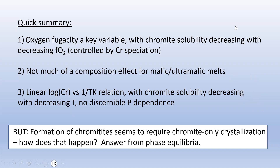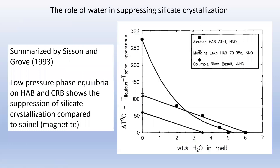Formation of chromatite seems to require chromite-only crystallization — so how does that happen exactly? We can answer that by looking at phase equilibria. One important effect on controlling oxide relative to silicate crystallization is the role of water. We've known for some time that water can have a significant effect on suppressing the silicate-in crystallization temperature, as summarized by Sisson and Grove 1993.